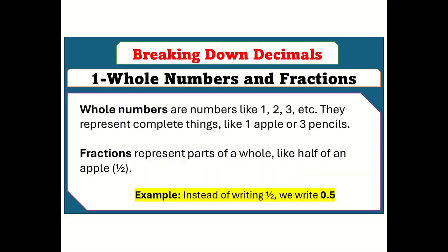Breaking down decimals — whole numbers and fractions. Whole numbers are numbers like 1, 2, 3, etc. They represent complete things, like 1 apple or 3 pencils. Fractions represent parts of a whole, like half of an apple. For example, instead of writing 1 half, we write 0.5.